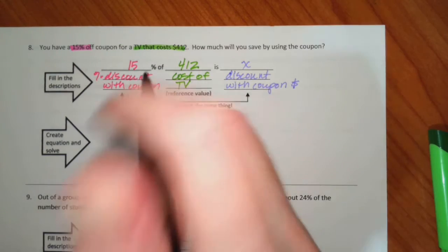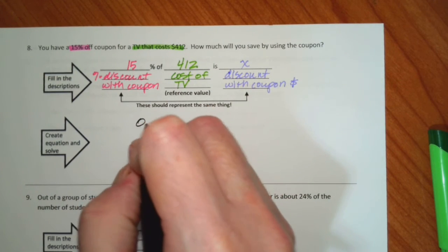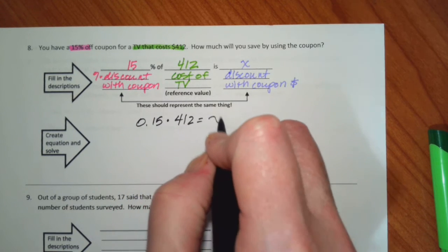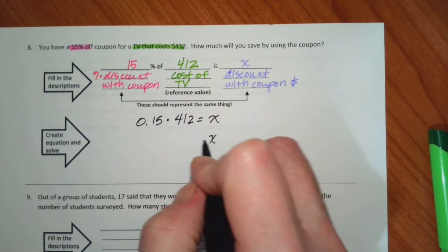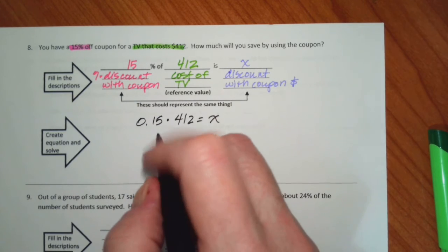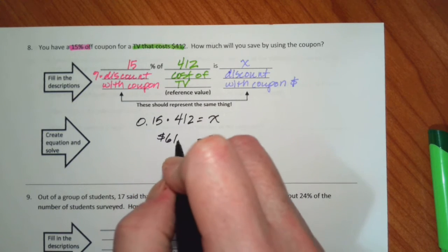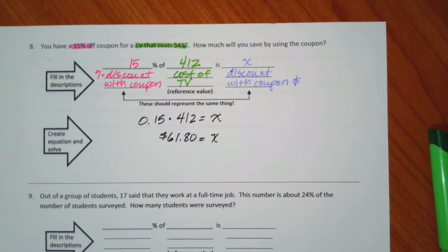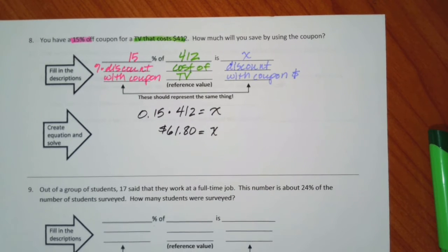My equation is going to be 0.15 times 412 is x. So x is $61.80. And again, in your head, be thinking about your benchmarks.